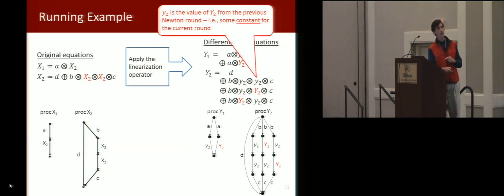But the key, and also it makes use of the value. It has some things where you have a y and a y, but these are small y's. And by that I mean it's the constant value. It's the value of capital Y2 from the previous Newton round. So for this round, it's just a constant value.